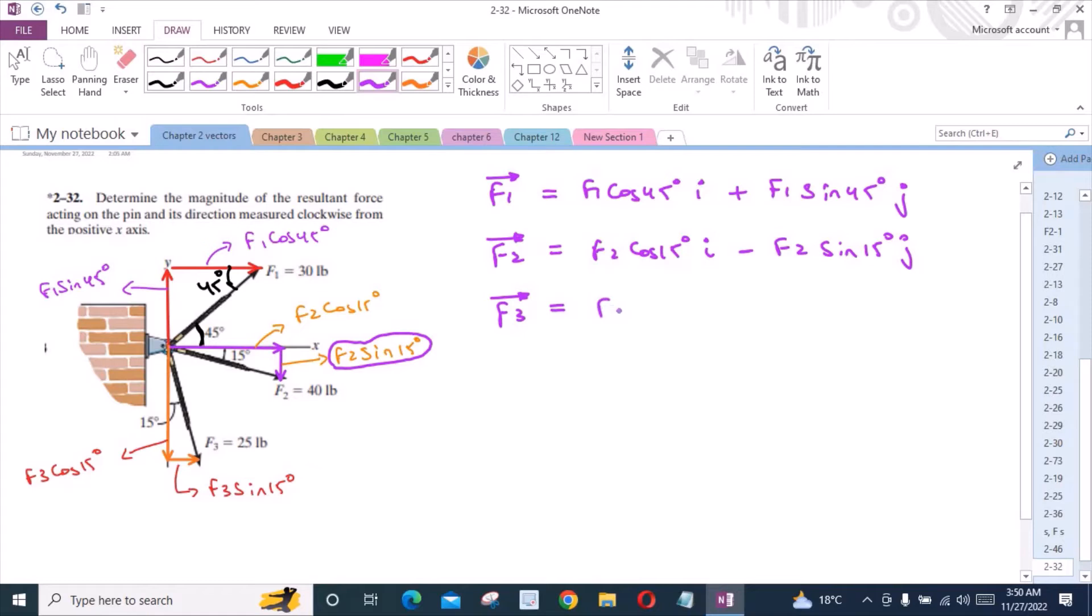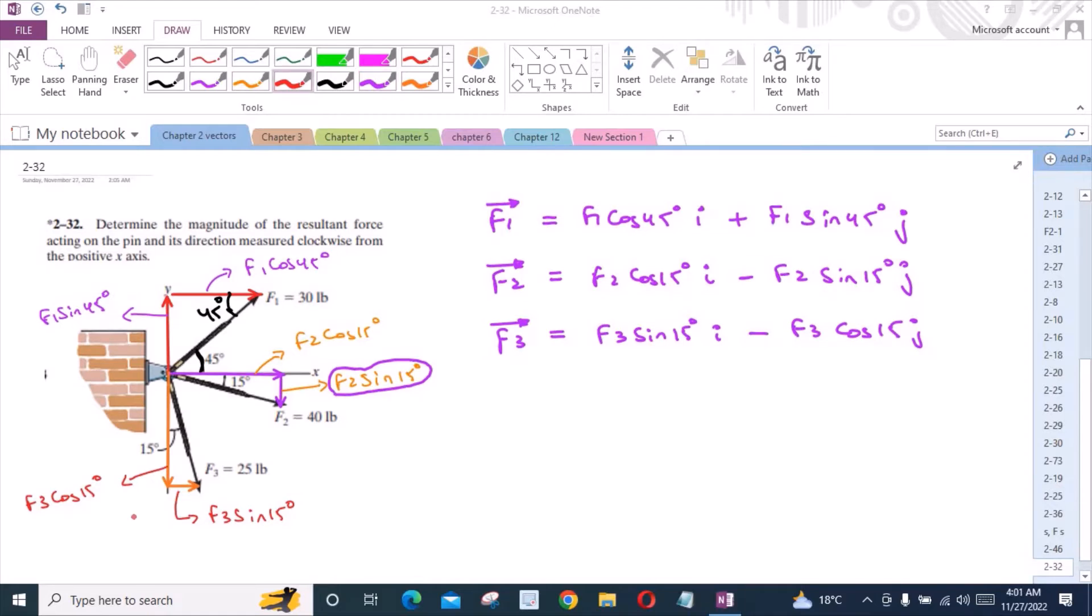Now for the force F3, I have F3 sin 15 degrees i minus F3 cos 15 degrees j. Now we can apply the equations of equilibrium.